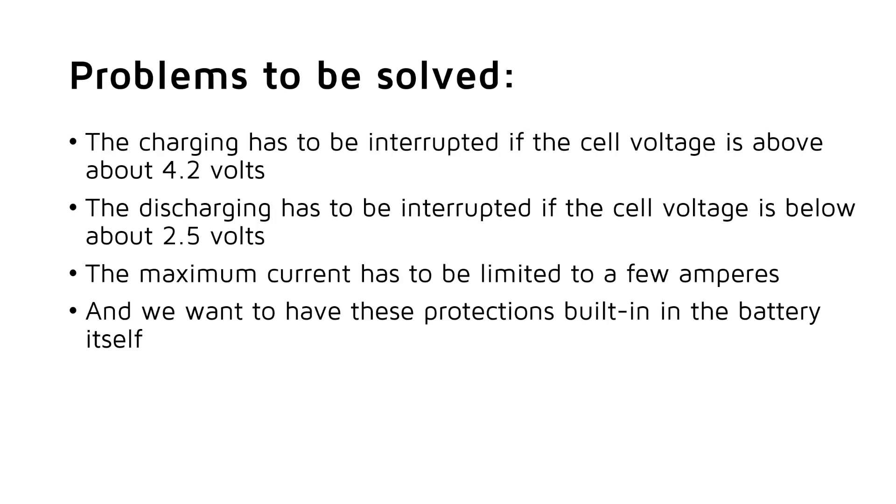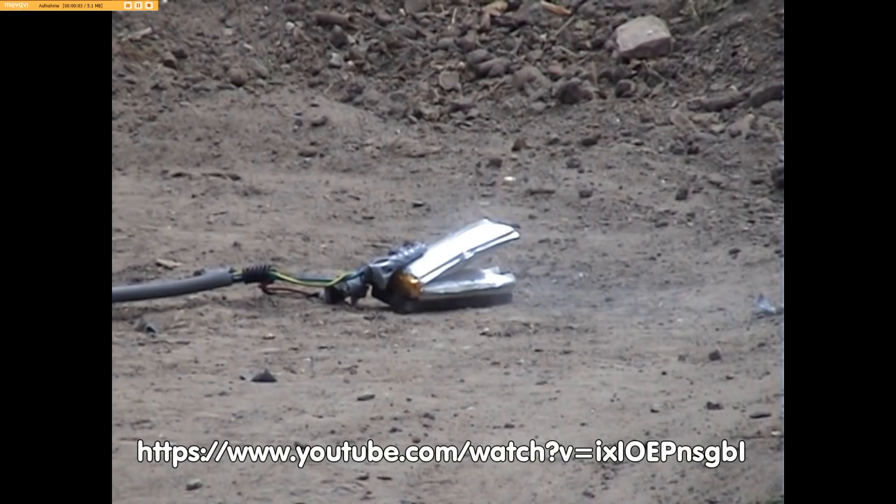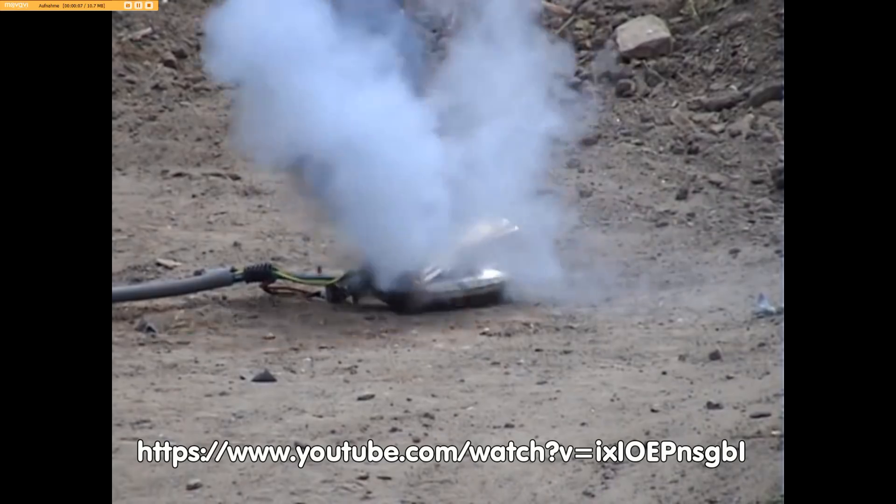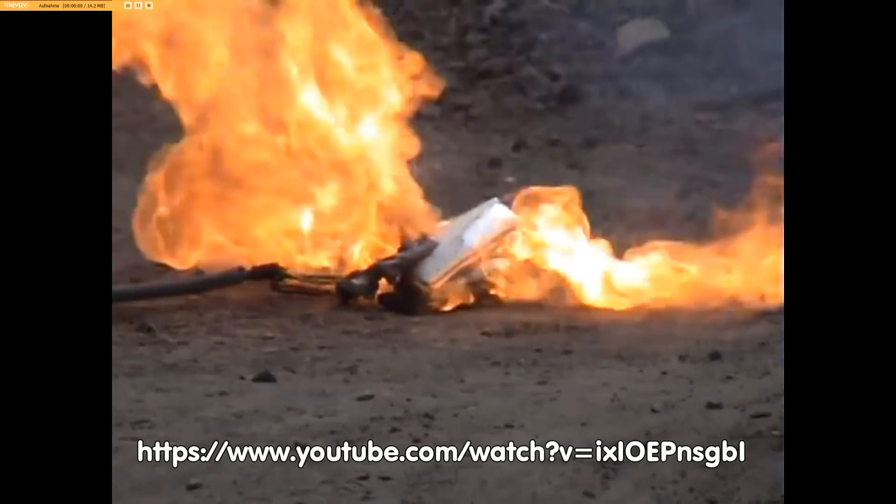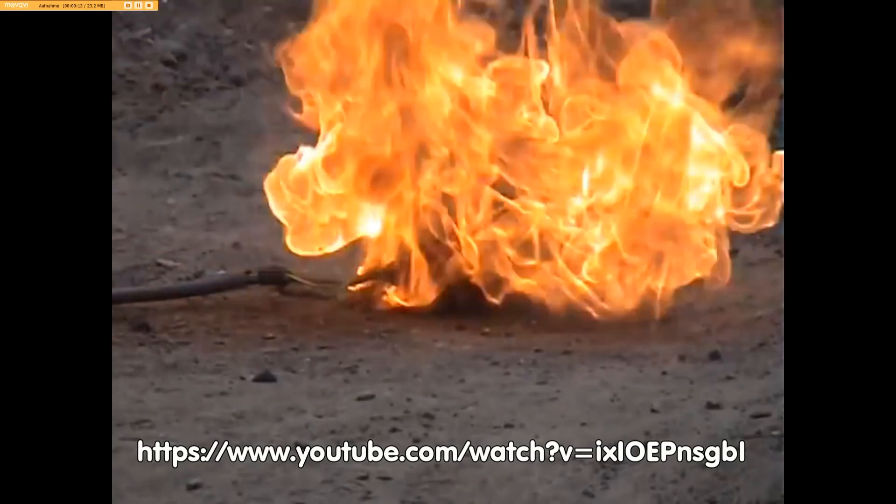Let's start with the first problem. A LiPo battery converts current into change of its chemical structure to store it for later usage. This process stops when its capacity is used. After that, unfortunately, the current flowing into the battery does not stop. What happens with the excess energy? As usual in physics, it is converted into heat and, if your charging current is high, the temperature of the cell increases.